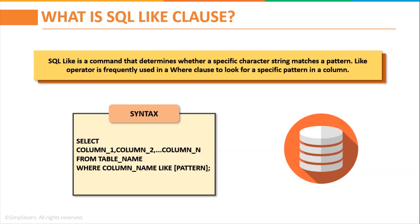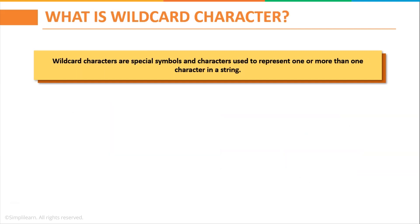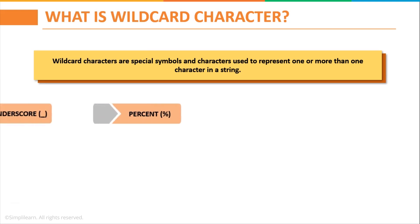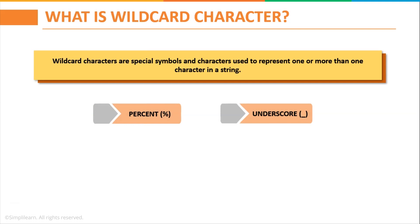Wildcard characters are the most vital tools of this operator. So let us go over what these are and how they are used with the LIKE operator. Wildcard characters are special symbols used to represent one or more characters in a string. These are imperative to the LIKE operator as they enable patterns to be specified — filtering data using certain patterns to identify a value in the database. The two wildcards used with the LIKE operator are generally percent (%) and underscore (_). Let's look at examples in a SQL statement to see how they are used.